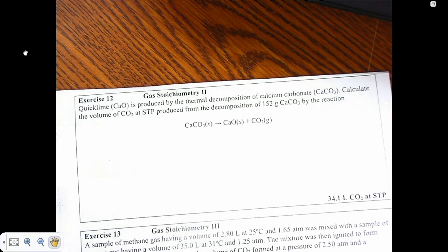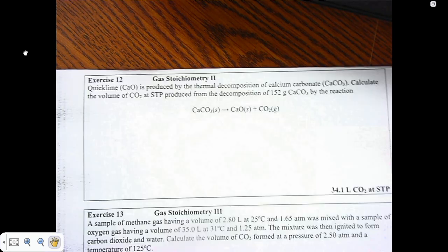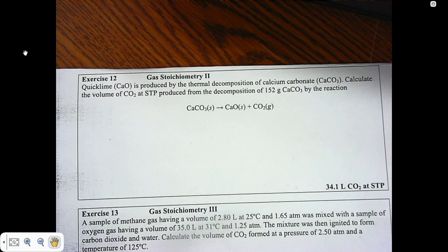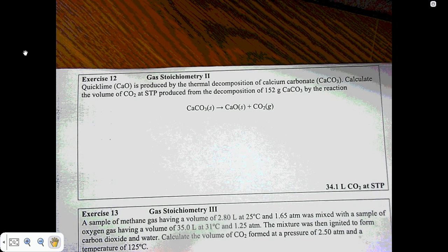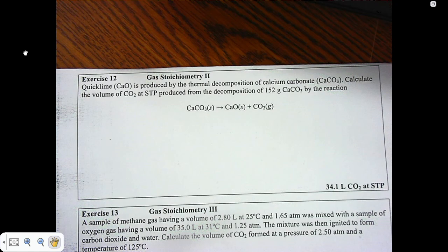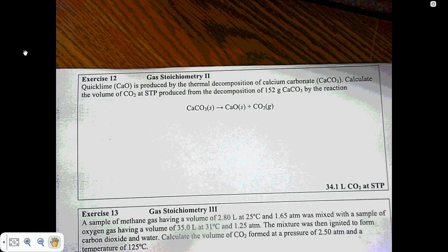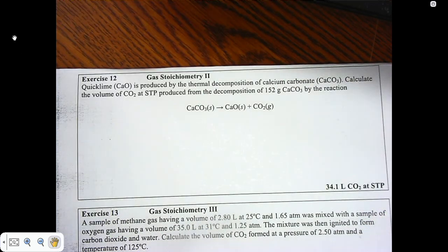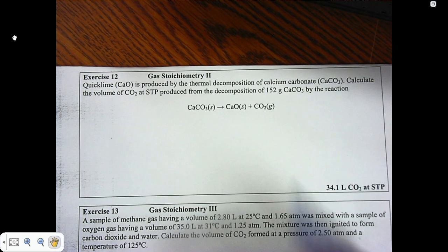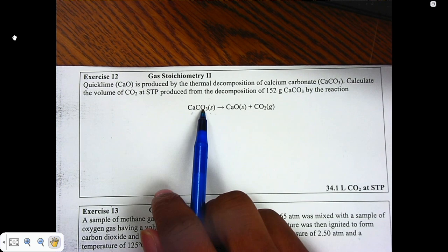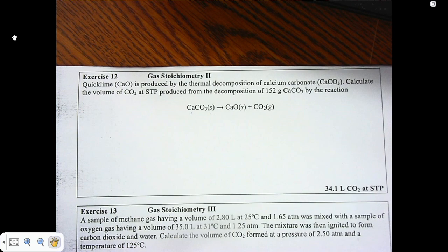In this next question about gas stoichiometry, it's telling us that quicklime, calcium oxide, is produced by the thermal decomposition of calcium carbonate. We're going to calculate the volume of carbon dioxide at standard temperature and pressure produced from the decomposition of 152 grams of calcium carbonate by the reaction below. Now, the first thing I look at is I make sure that my reaction is balanced. And looking at it, I see that my calcium is checked out. I have one carbon here, one carbon there, and then my oxygen is checked out as well. Three here and three oxygen there. So I don't have to balance the chemical equation, which is a plus.